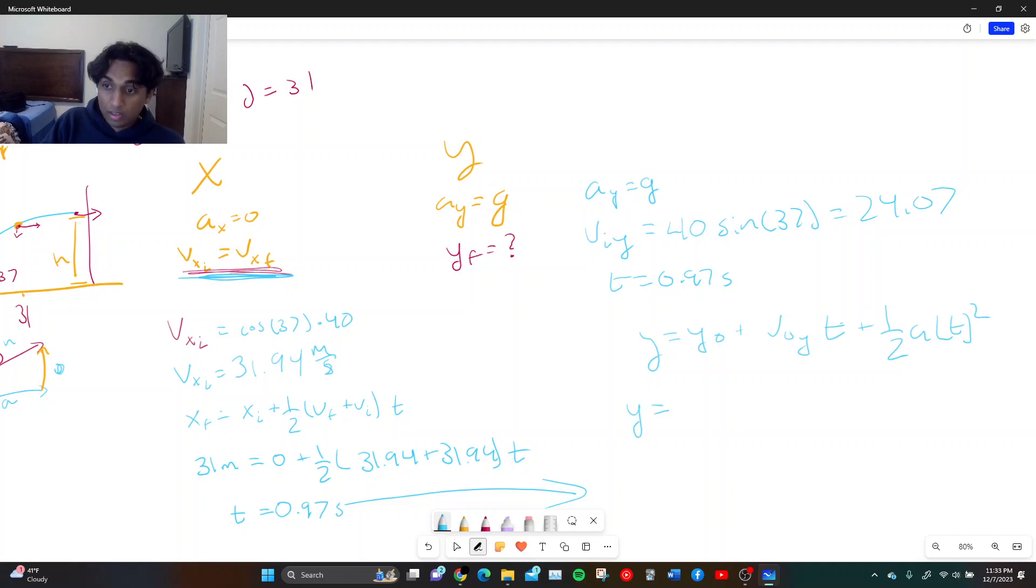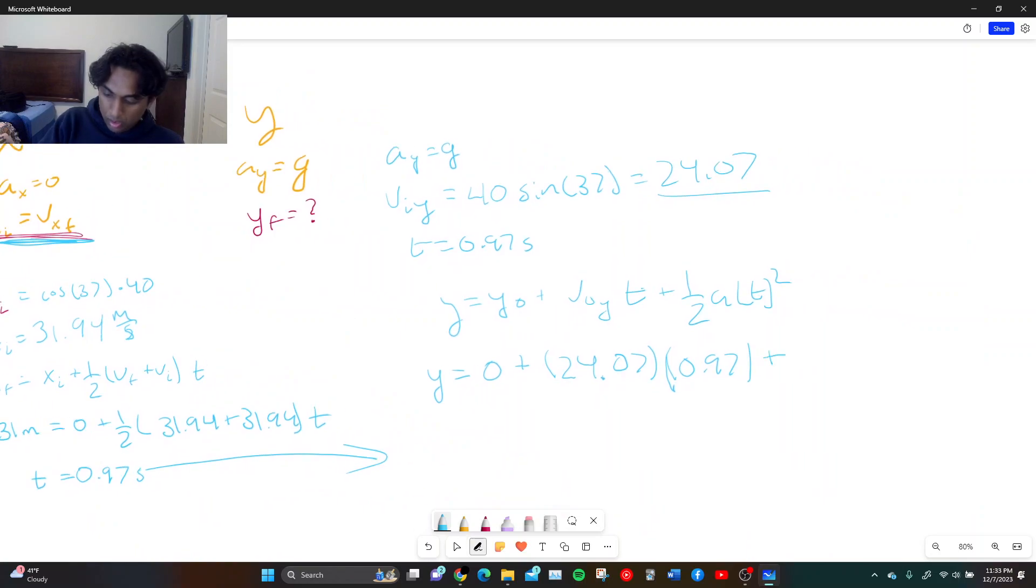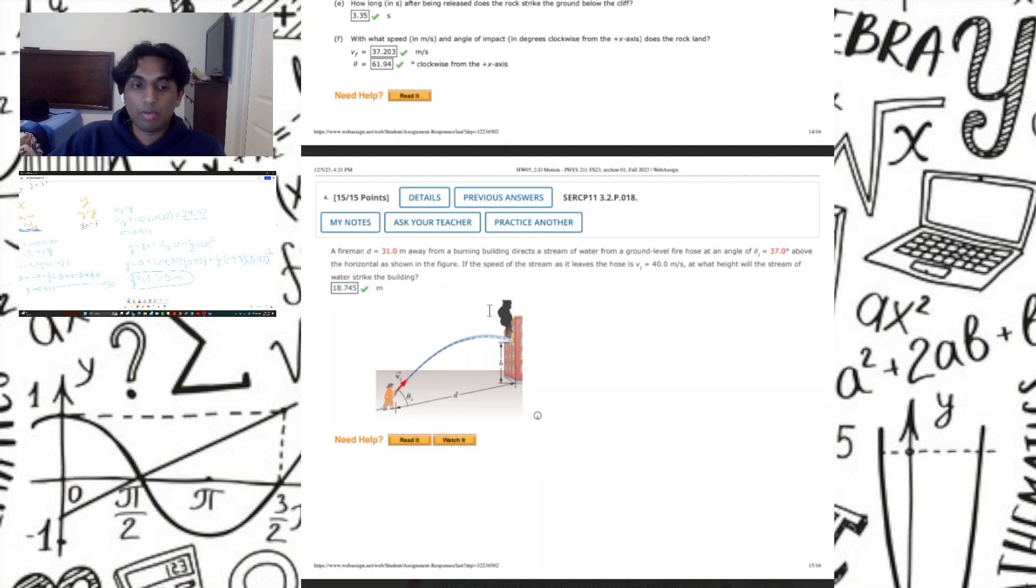This will be y is equal to y initial plus velocity y initial times time plus 1 half a t squared. So let's sub things in. y is equal to, well, that's our y final, that's what we're trying to find. Height initial is 0. Our velocity y zero we just found right up here to be 24.07 times our time of 0.97 plus 1 half negative 9.8 times 0.97 squared. I'm going to put this into a calculator real quick and you got, wouldn't you know, 18.75 meters.